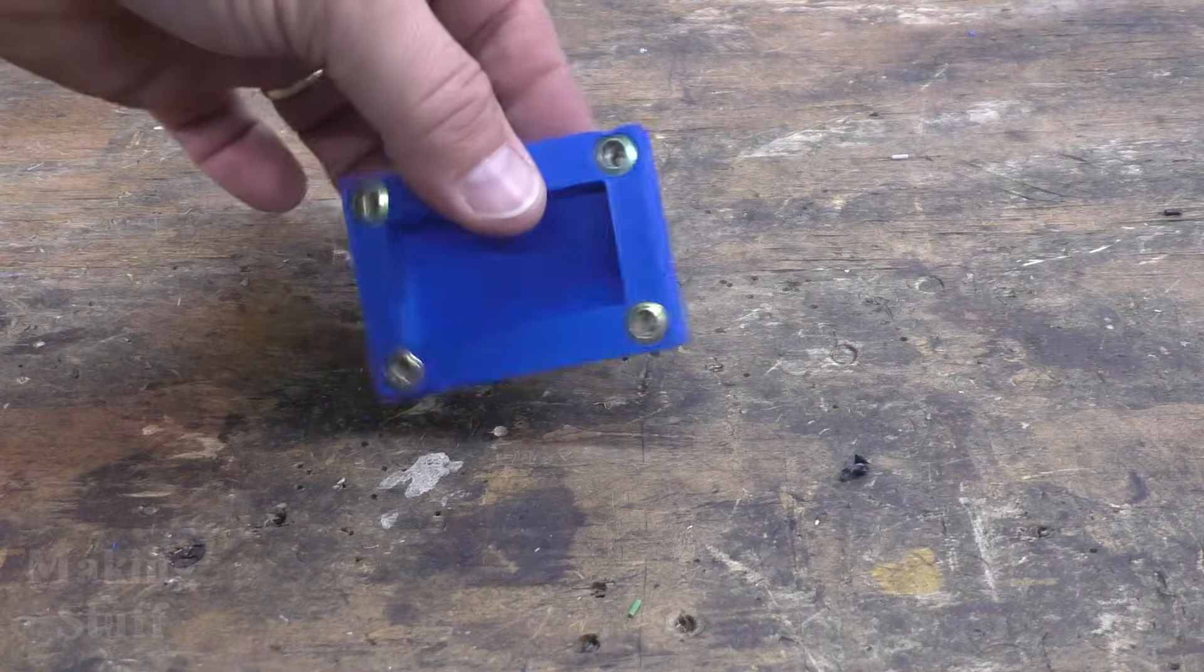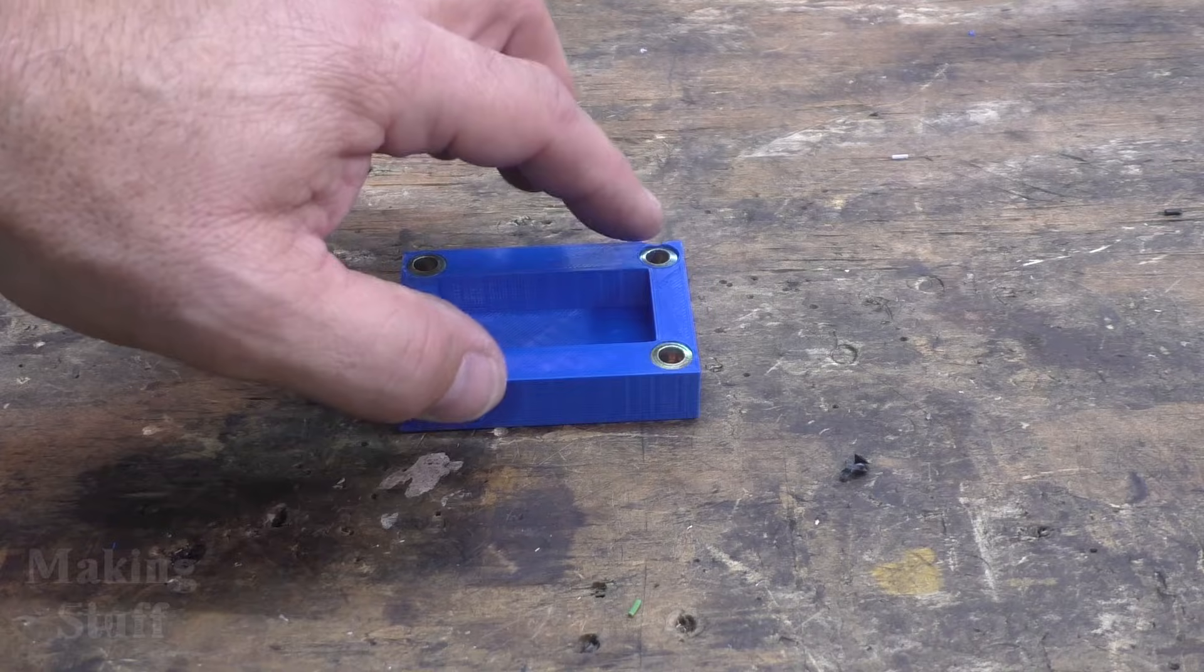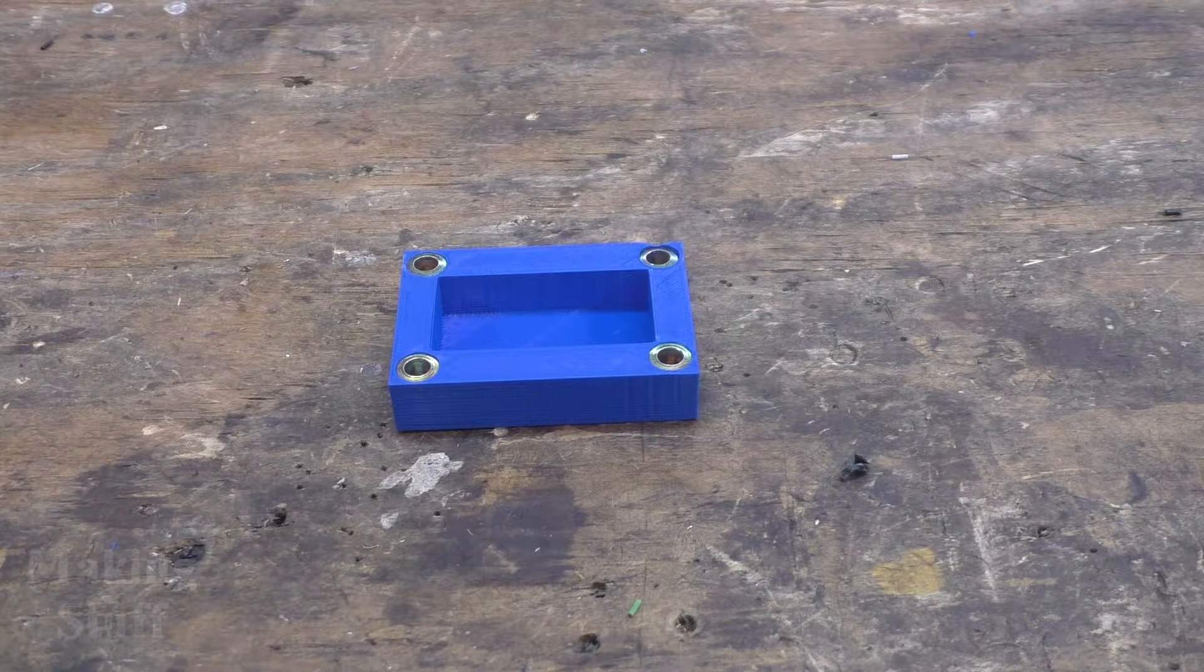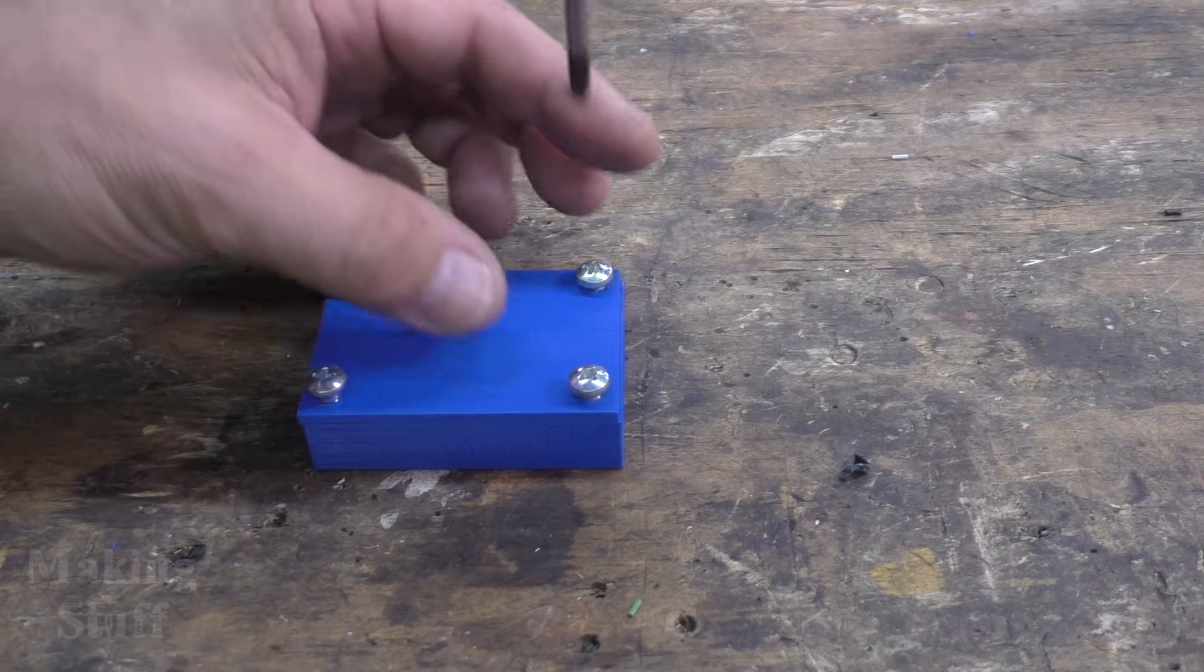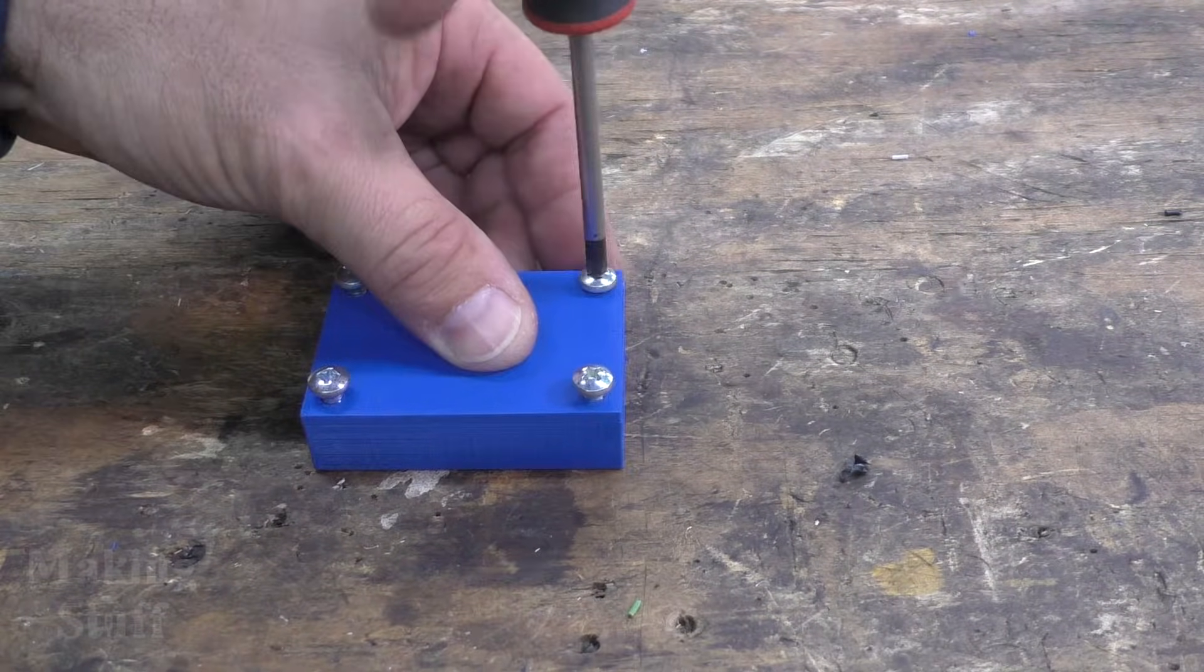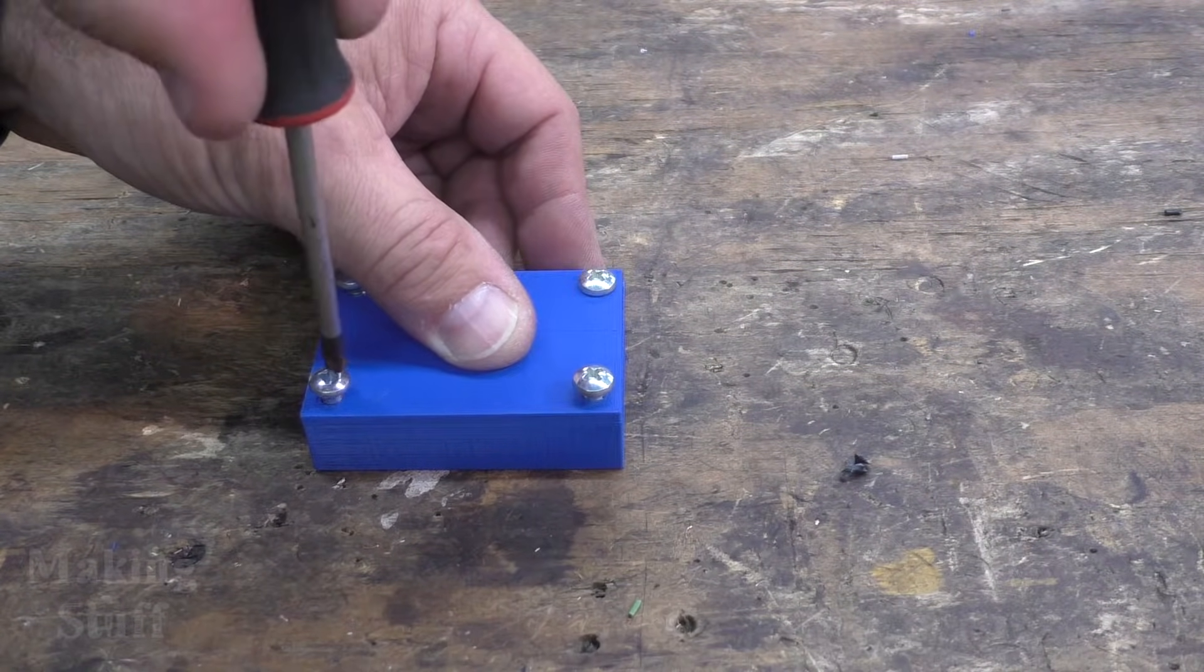Okay, so here is my enclosure with the rivet nuts installed in the base. And now I can just put my lid on and tighten these screws down just to make sure everything lines up. And it looks like it does.